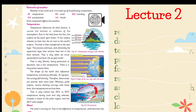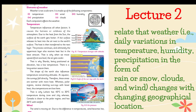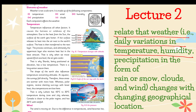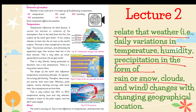Then in Lecture Number Two, the students will be able to relate the weather — that is daily variations in temperature, humidity, precipitation in the form of rain and snow, clouds, and wind changes — with changing geographical location. Bachche different elements jo hain weather ke, unke baare mein padhenge aur kaise geographical location change hone se ye change ho jaate hain.